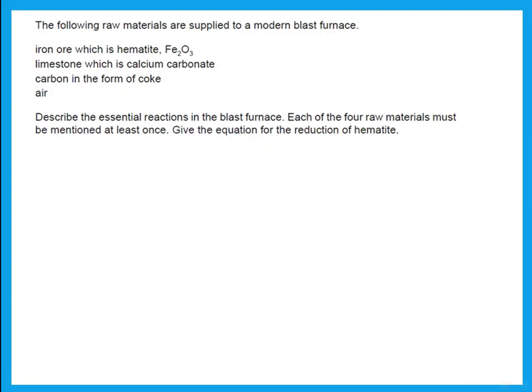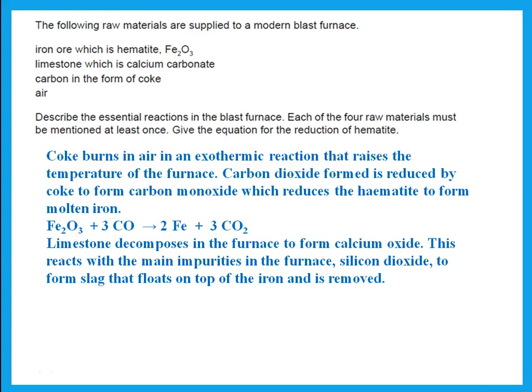The following raw materials are supplied to a modern blast furnace: iron ore hematite, limestone (calcium carbonate), carbon in the form of coke, and air. Describe the essential reactions in the blast furnace. When he says describe, that means you should say something in words — each of the four raw materials must be mentioned at least once, and give the equation for the reduction of hematite.